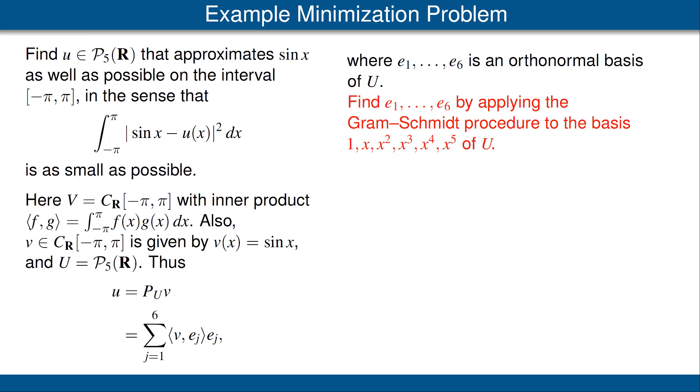Now what we need to do is find an orthonormal basis for P_5(R). We have a basis: 1, x, x squared, x cubed, x to the 4th, x to the 5th, but that is not orthonormal with respect to the inner product that we're using.